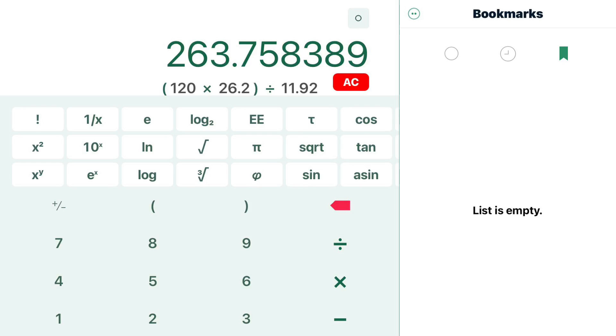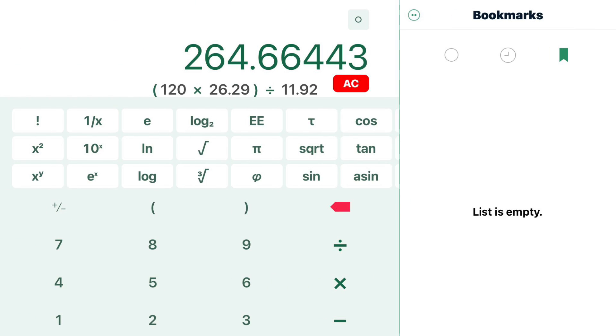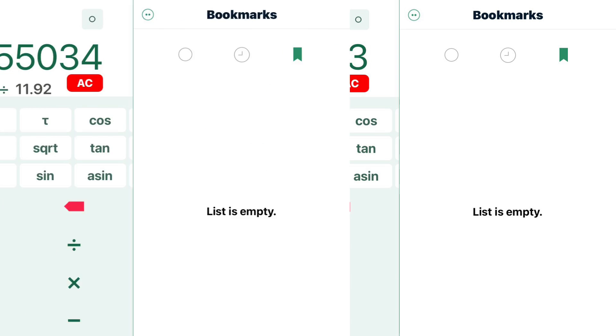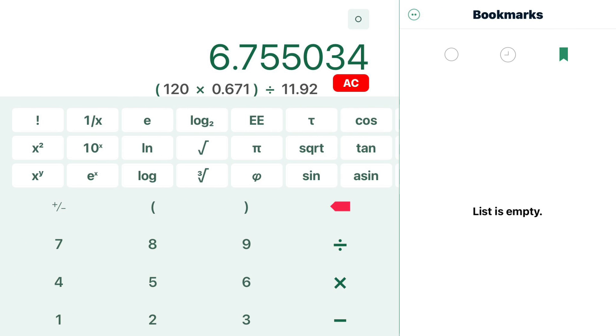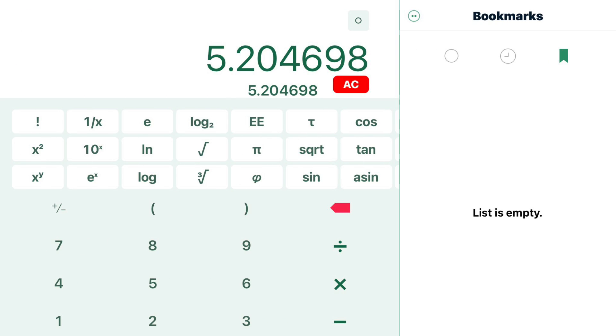You can see the simple formula to extrapolate the number. Again, assuming 120 volt line voltage, multiplied by the voltage that we measured, divided by the line input voltage of 11.92. And you can see the calculated voltage for each winding.